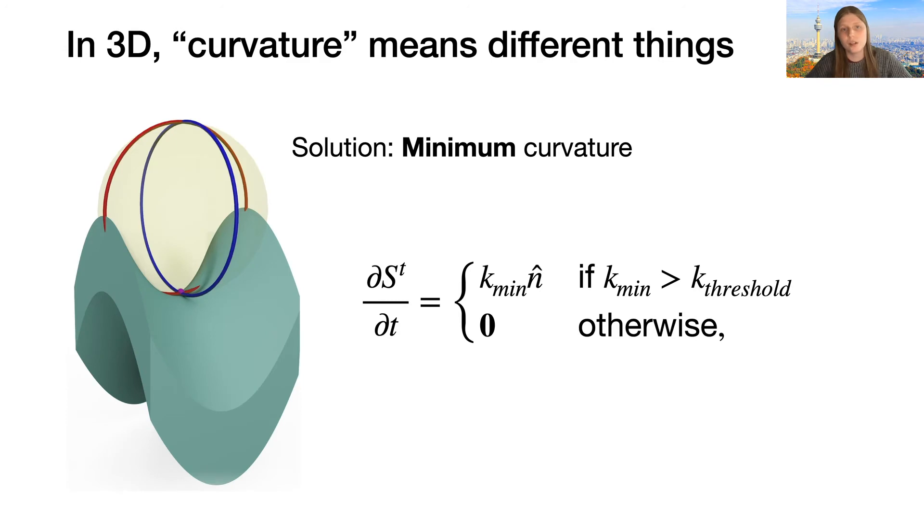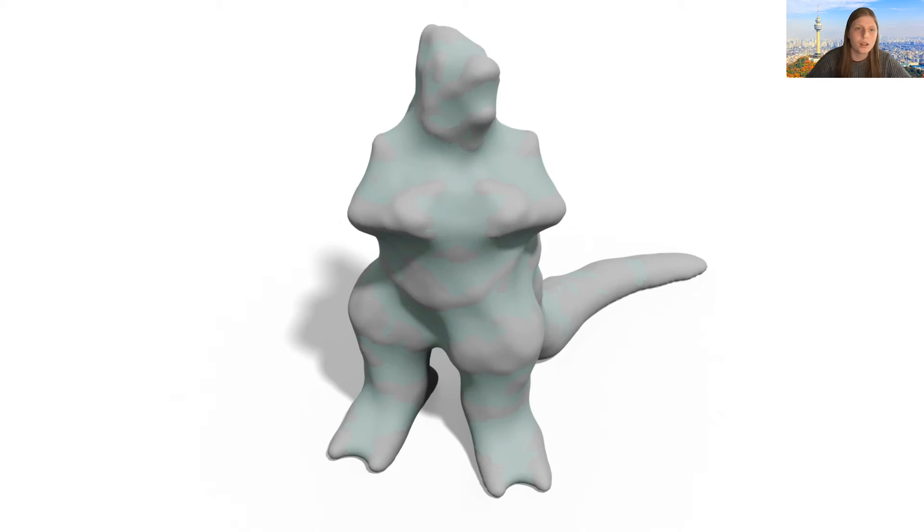The solution we find is the minimum curvature. Note that, again, this makes perfect sense if we look at the closing with the definition of a region changes only if we cannot fit a sphere tangentially. A sphere fits tangentially on a surface if the curvature in every direction is smaller than that of the surface, or to say the same if the minimum curvature is smaller. Fortunately, this is enough to define a flow that experimentally converges to the closing.